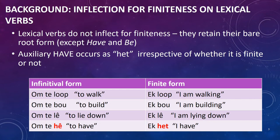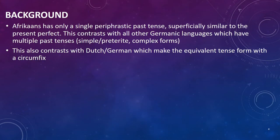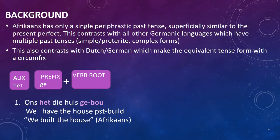When we're talking about the past tense, Afrikaans has only a single periphrastic past tense, which is superficially similar to the present perfect in related languages such as Dutch or German. Having only a single past tense contrasts with all the other West Germanic languages — in fact all the other Germanic languages — which have multiple past tenses, such as simple preterite forms as well as more complex past forms. In example one, you'll see how the Afrikaans past tense is built: we have an auxiliary 'het' followed by a verb root which has a prefix. This also contrasts with Dutch and German, which make the equivalent tense form with a circumfix.